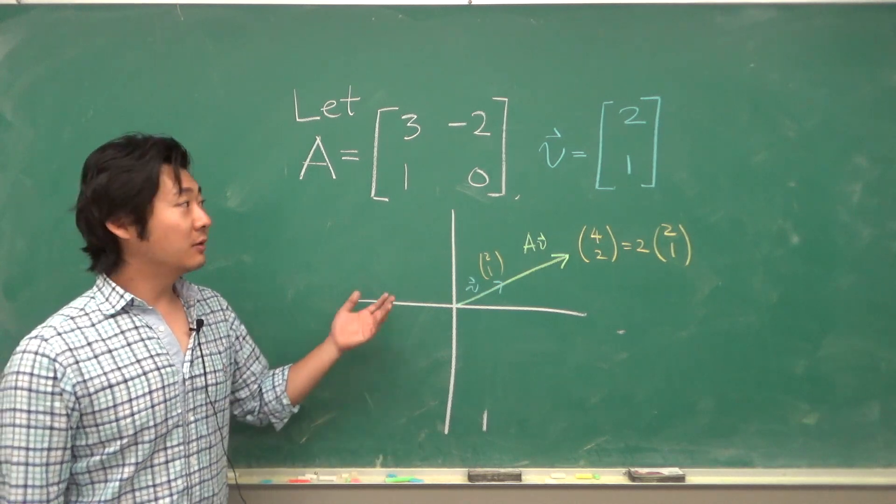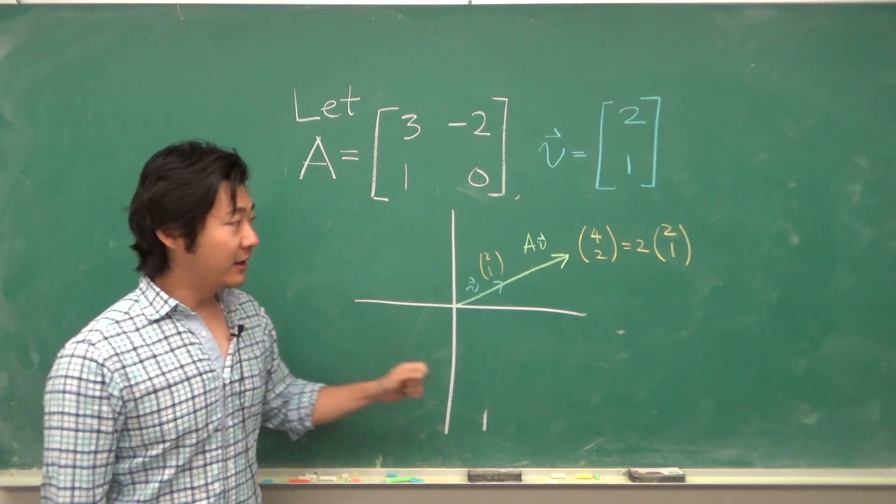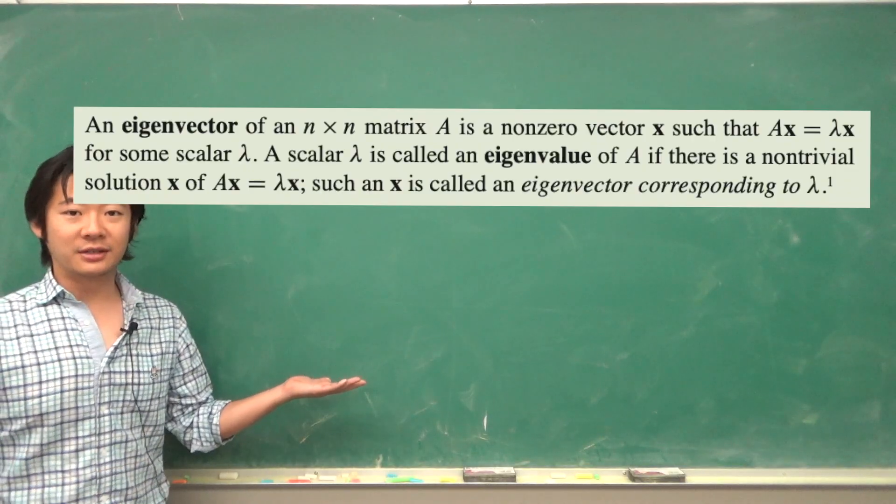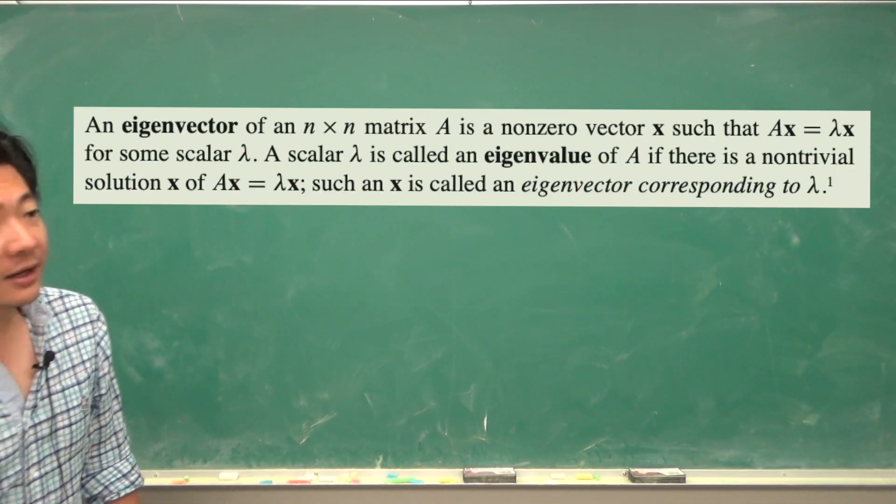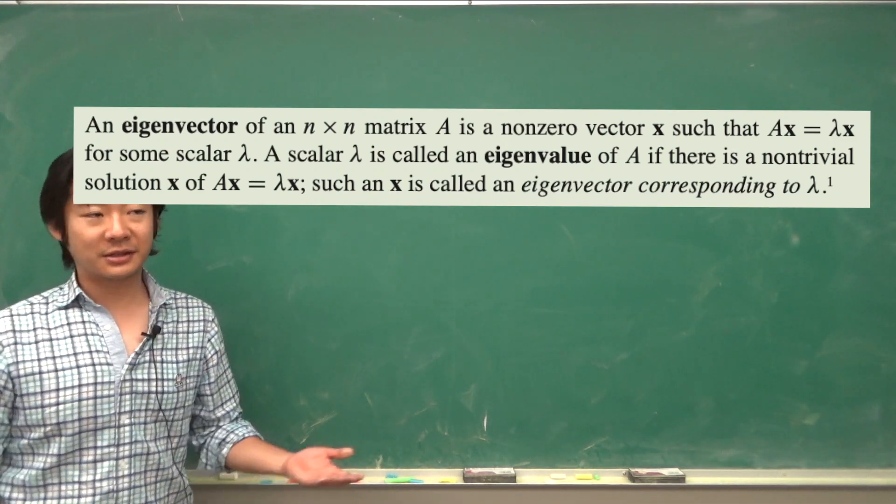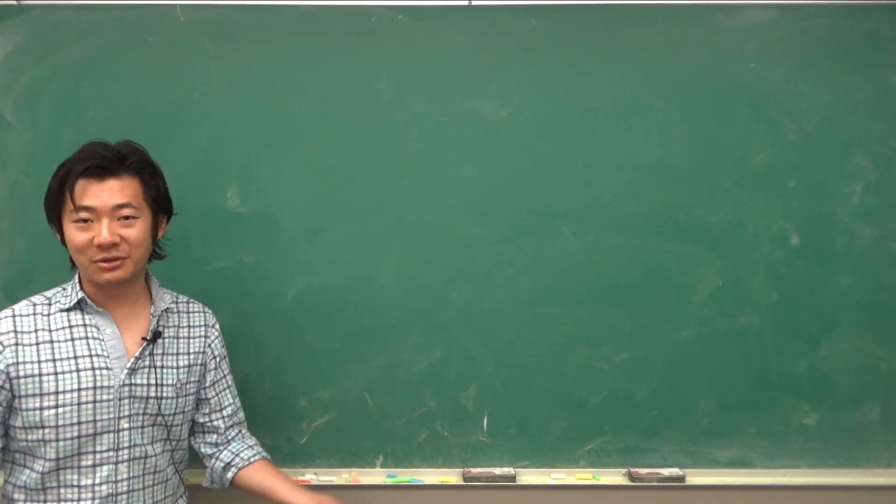When such a thing happens, we call V the eigenvector of the matrix A with eigenvalue 2. So here is the formal definition. We have to make sure that the vector V is non-zero, or else 0 would be an eigenvector with eigenvalue 0, but that's too trivial.